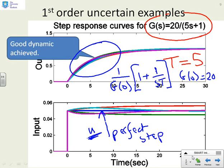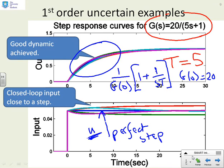So there's a summary. We've got a good dynamic for this first order model. And the closed loop input is close to a step, which means no over-actuation, open loop dynamics, nice and safe.